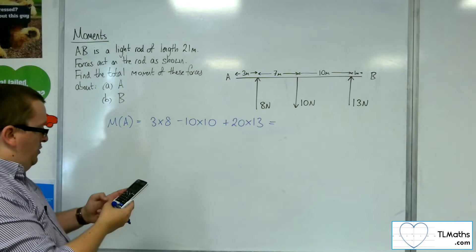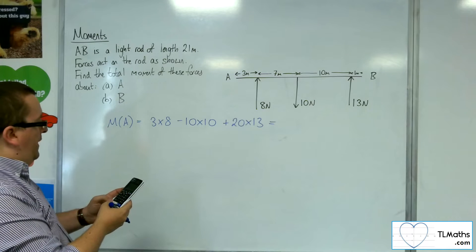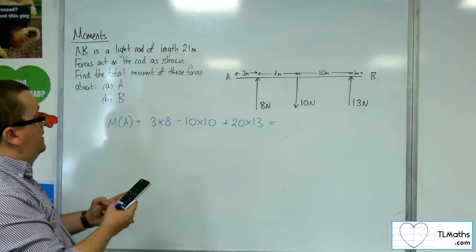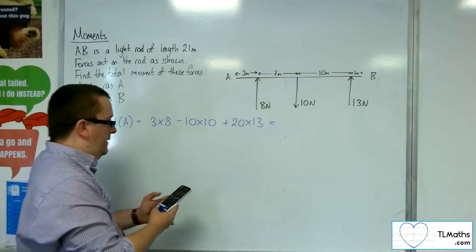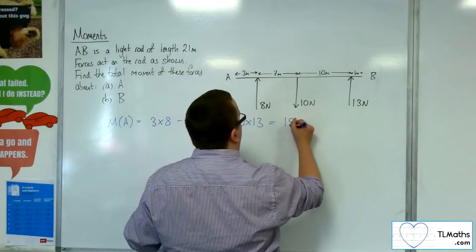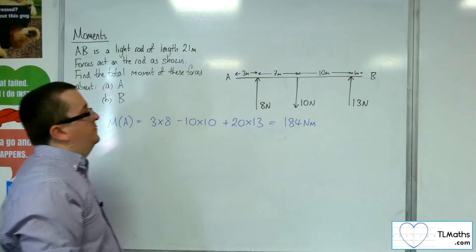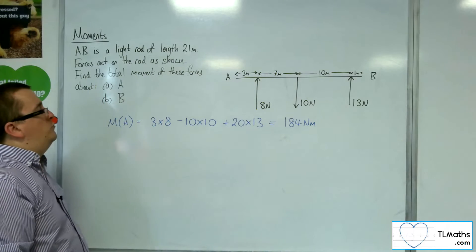So the moment about A is the total of those, so 3 lots of 8, take away 10 lots of 10, plus 20 lots of 13, and that gets us 184 newton meters. That would be the end result.